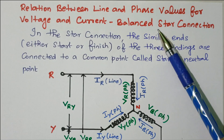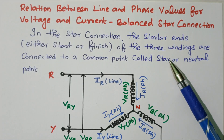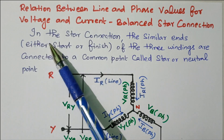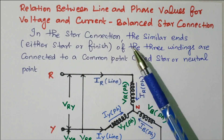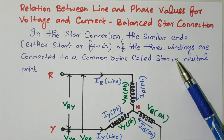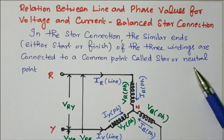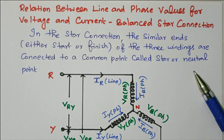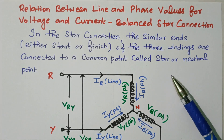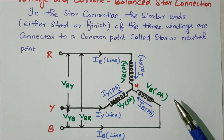Now we will go to the topic: balanced star connection, and the relation between voltage and current for both line and phase values. First you will see the star connection. In the star connection, the similar ends — either start or finish — of the three windings are connected to a common point called a star point or neutral point.